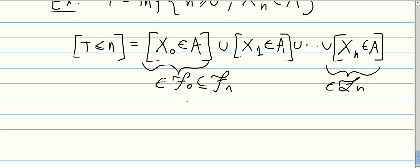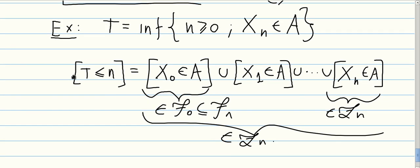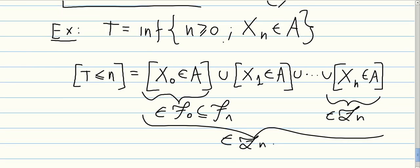So the whole union belongs to Fn. So this type of times, the first time such that something happens, these are called hitting times and are also stopping times.